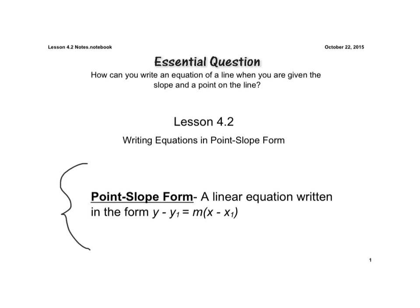So I think this is in your book, your journal book, but make sure you have this written down. If not, the point-slope form is a linear equation written in the form of y minus y₁ equals m times x minus x₁. Again, m is equal to our slope, just like it's been. And then the x₁ and the y₁ is a point on the line.